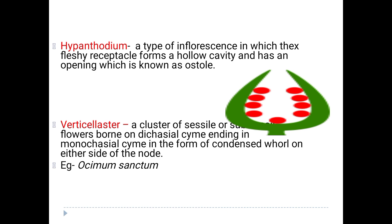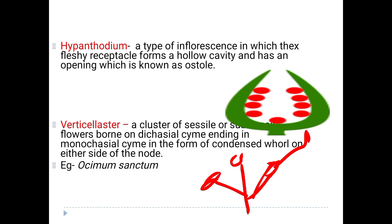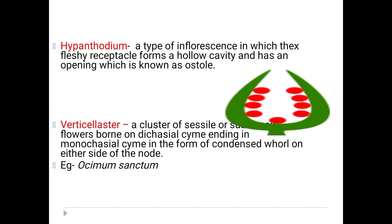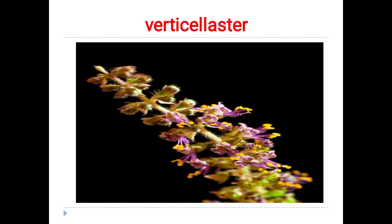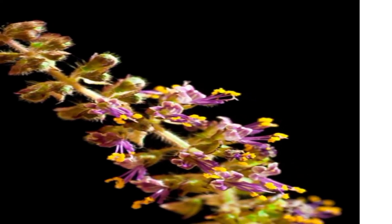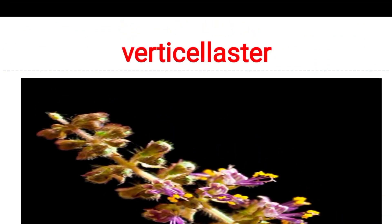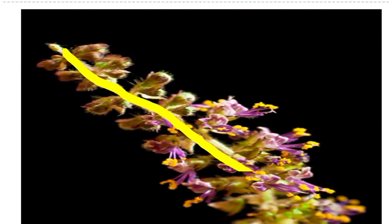Verticillaster is another special type where sessile flowers are born on a dichasial cymose pattern. Both sides have little branches, and it ends in monochasial cymose. Flowers appear condensed on either side of the node at the same time. This is called verticillaster, seen in Ocimum sanctum which is Tulsi. This structure has cymose inflorescence like dichasial cymose but later turns out to be monochasial.